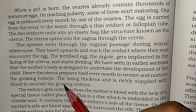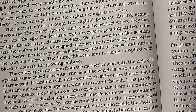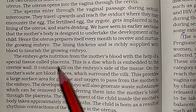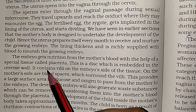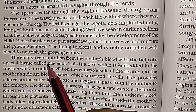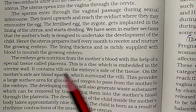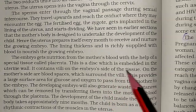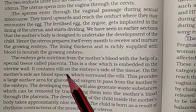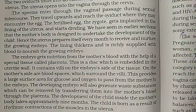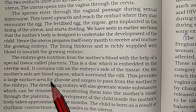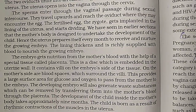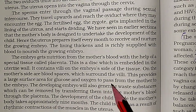The embryo gets nutrition from the mother's blood with the help of a special tissue called the placenta. This is a disc embedded in the uterine wall. It contains villi on the embryo side of the tissue, providing a large surface area for glucose and oxygen to pass from the mother to the embryo.